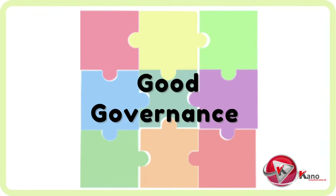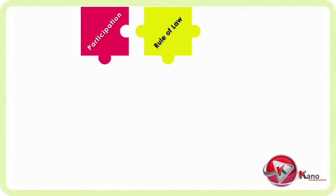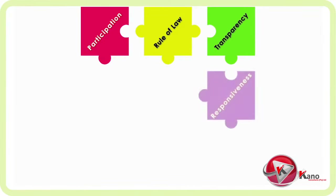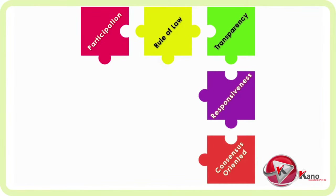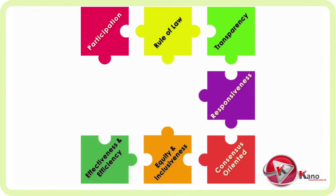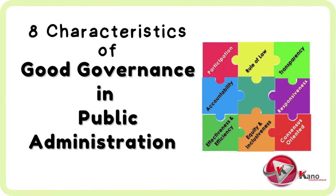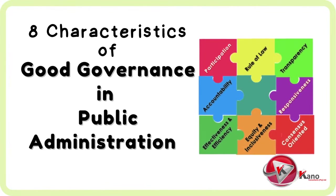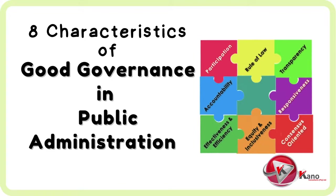There are eight characteristics of good governance that are necessary for the proper management of public administration, and they are participation, rule of law, transparency, responsiveness, consensus-oriented, equity and inclusiveness, effectiveness and efficiency, as well as accountability. In this video, we will list and briefly discuss the eight characteristics of good governance in relation to public administration.